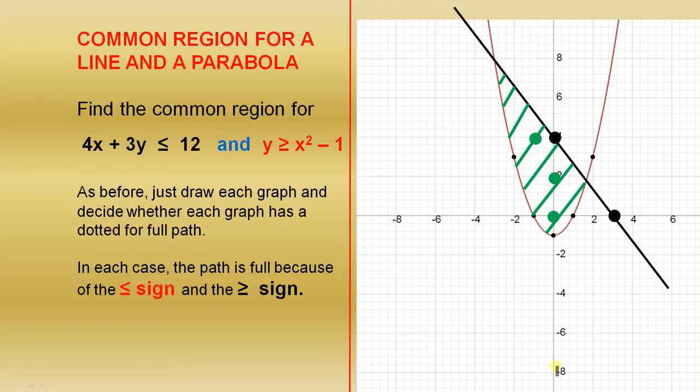Here's a slightly tricky one but it's not that difficult because we'll follow the same principles. The common region for a line and a parabola. Find the common region for 4x plus 3y is less than or equal to 12 and y is greater than or equal to x squared minus 1. As before, just draw each graph and decide whether each graph has a dotted or full path. In each case the path is full because of the less than or equal to sign and the greater than or equal to sign.